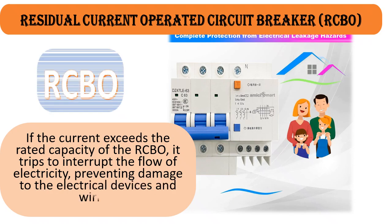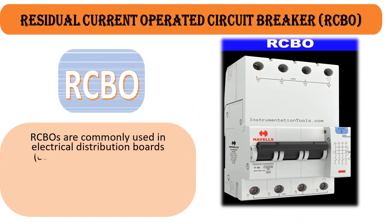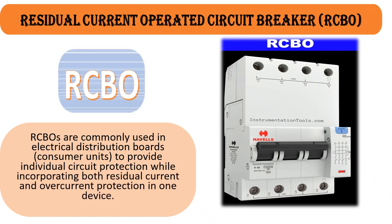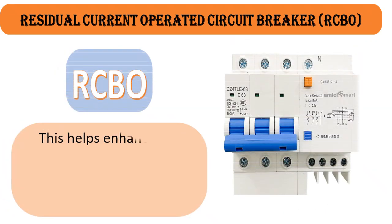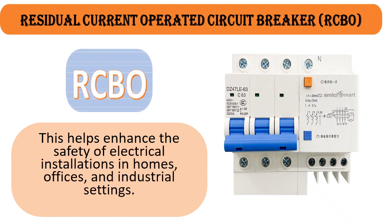This prevents damage to electrical devices and wiring. RCBOs are commonly used in electrical distribution boards and consumer units to provide individual circuit protection, incorporating both residual current and overcurrent protection in one device. This helps enhance the safety of electrical installations in homes, offices, and industrial settings.